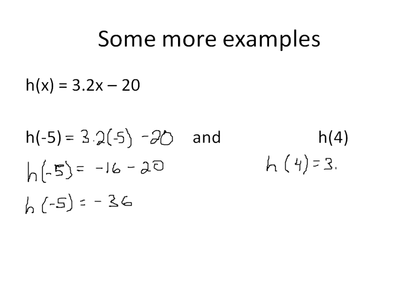Again, same exact function, 3.2x, which will be 4 minus 20. So my function at the point positive 4 is equal to, and I'll do 3.2 times 4, which is 12.8 minus 20. And 12.8 minus 20 gives me my function is equal to negative 7.2.